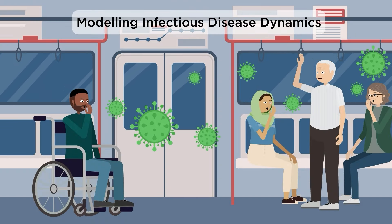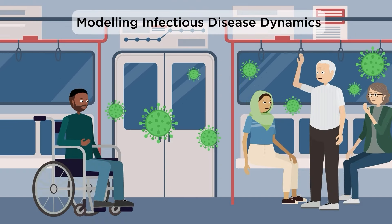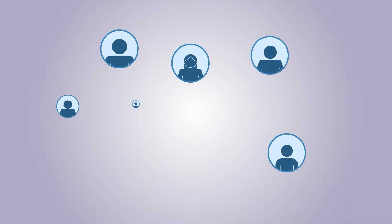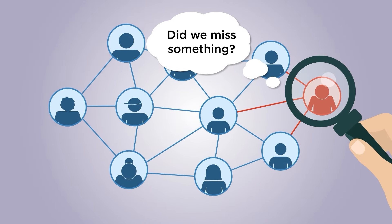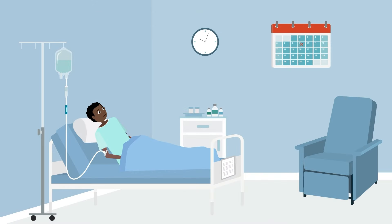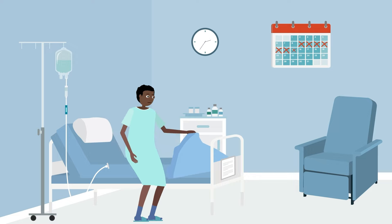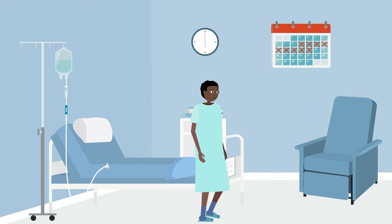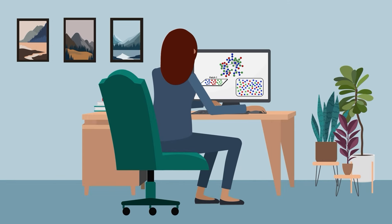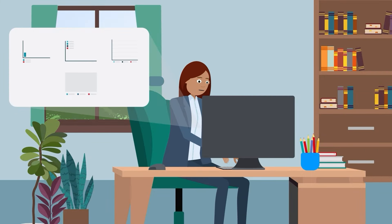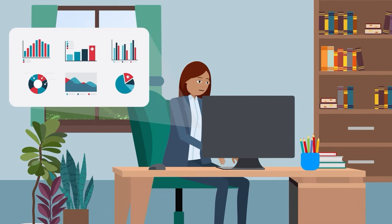What can mathematical models tell us about how infectious diseases spread? They can help us to understand where we might have missed an important factor in disease spread. Models help us to quantify things like how long people take to recover. Trying different approaches helps researchers find the best settings for their models, based on the data available and how the model needs to work.